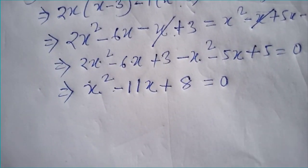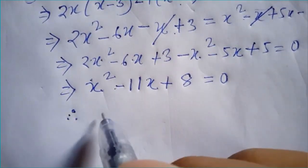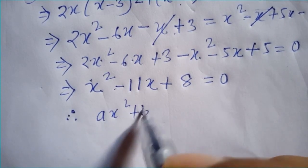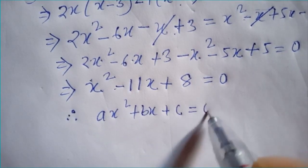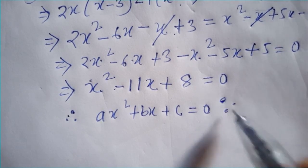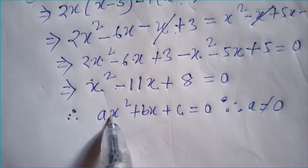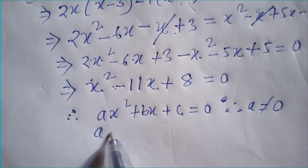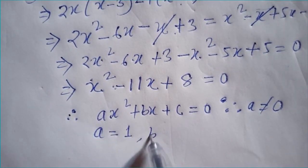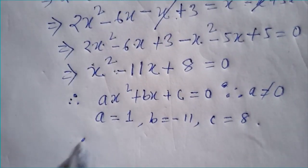This is now in general form. The general form is ax squared plus bx plus c equals 0. Comparing our equation, a equals 1, b equals minus 11, and c equals 8. Therefore, these are the coefficients.